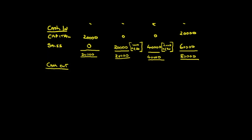Looking at the information on what cash flows are going to go out — there are a few things we're going to spend money on. The first one is what we call purchases. In accounting and finance, purchases means buying something you will sell on, or materials you'll incorporate into a product and sell on — the raw materials. In the first month, we're going to have to make 1,000 of these items and the material cost is 4 euros each — so that's 4,000. That's 1,000 units multiplied by 4 euros.